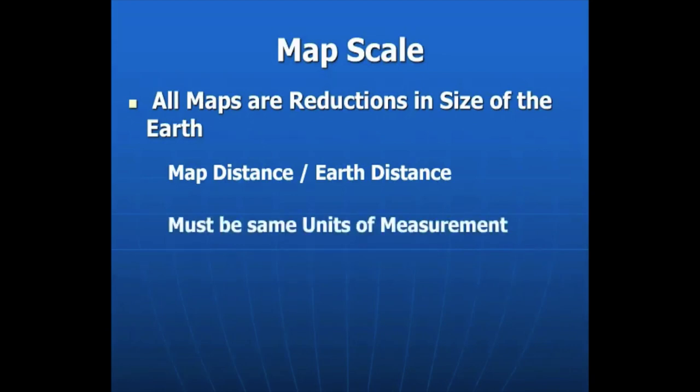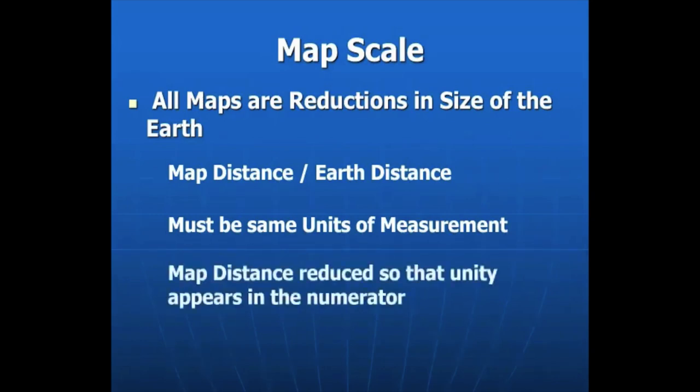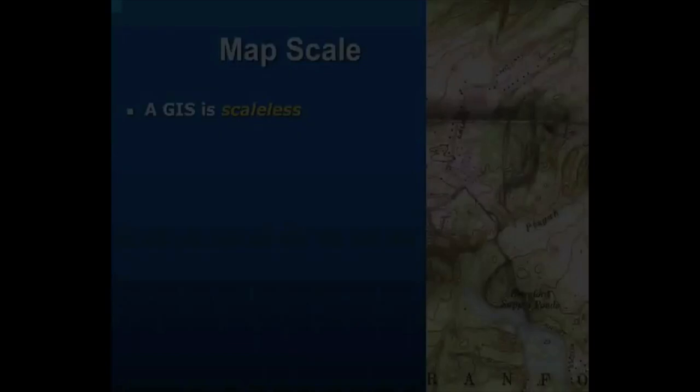And we must keep them in the same unit so we never say one inch to one mile, because that's two different units, or one meter to one kilometer. It has to be meters on both sides or inches on both sides. And we always have to have a one to be able to do a comparison of how much of a reduction have we done, how far away from the surface of the earth have we gone.